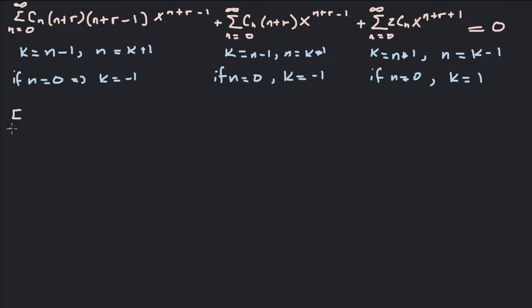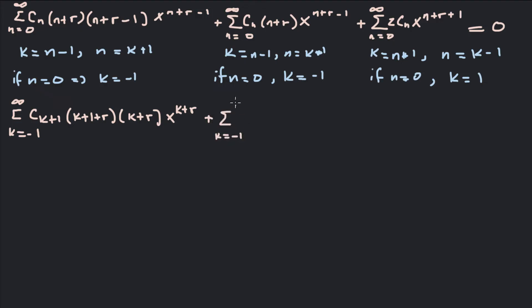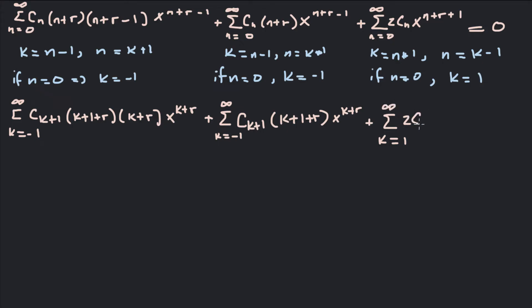After re-indexing, the first sum becomes: sum from k equals negative 1 to infinity of c_{k+1} times (k+1+r) times (k+r) times x^(k+r). Plus the sum from k equals negative 1 to infinity of c_{k+1} times (k+1+r) times x^(k+r). Plus the sum from k equals 1 to infinity of 2c_{k−1} times x^(k+r). We've succeeded in making all exponents the same.